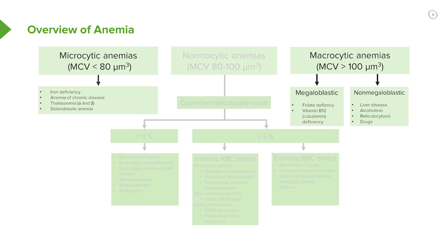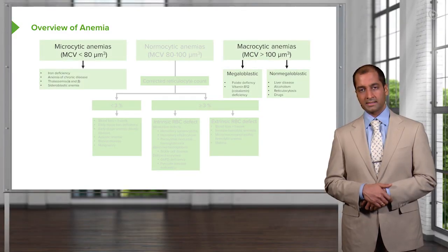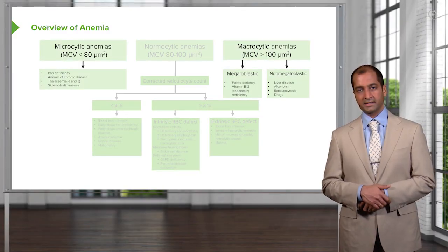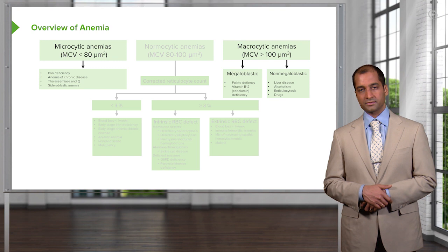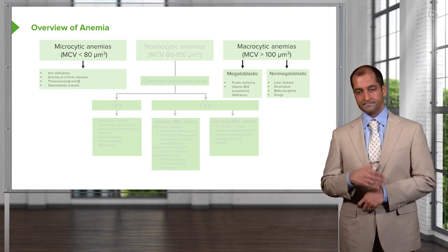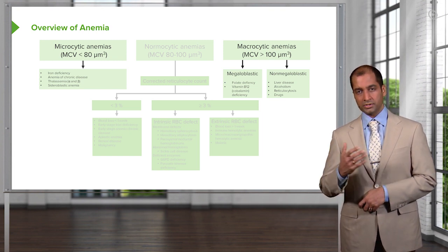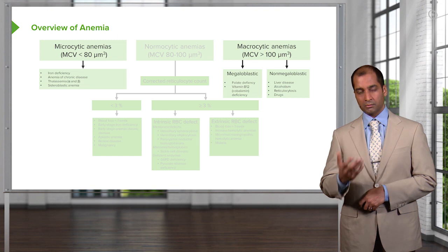The megaloblastic anemias that are often tested are folate deficiency and vitamin B12 deficiency. There are a couple of others we have to address as well under megaloblastic, including Diamond-Blackfan anemia and orotic aciduria. Those are things that have shown up, are showing up, and will show up.